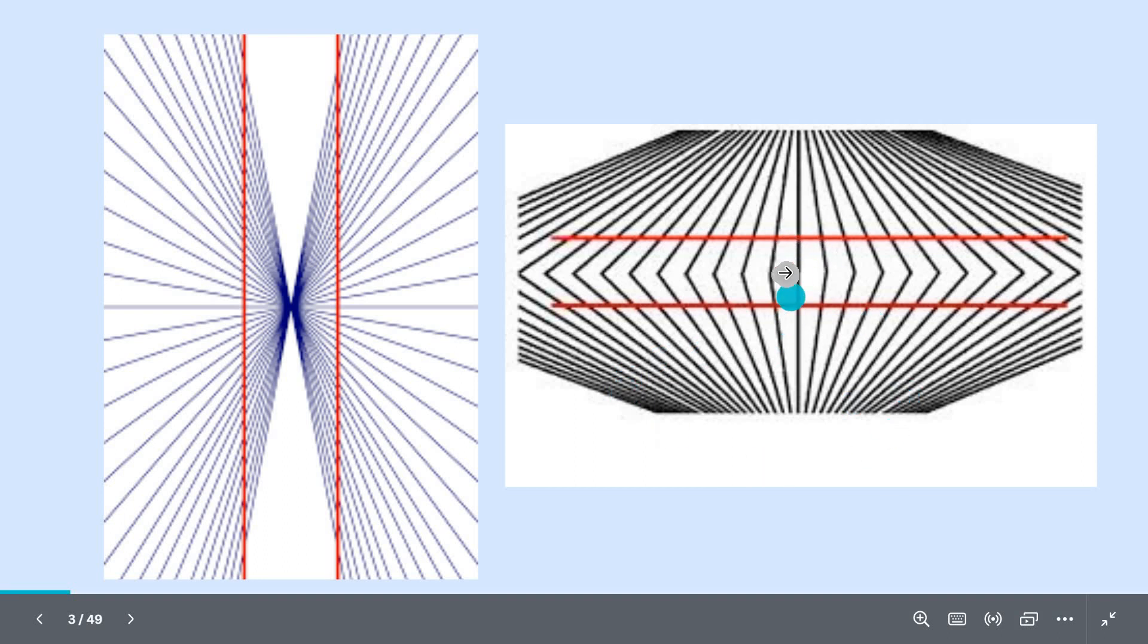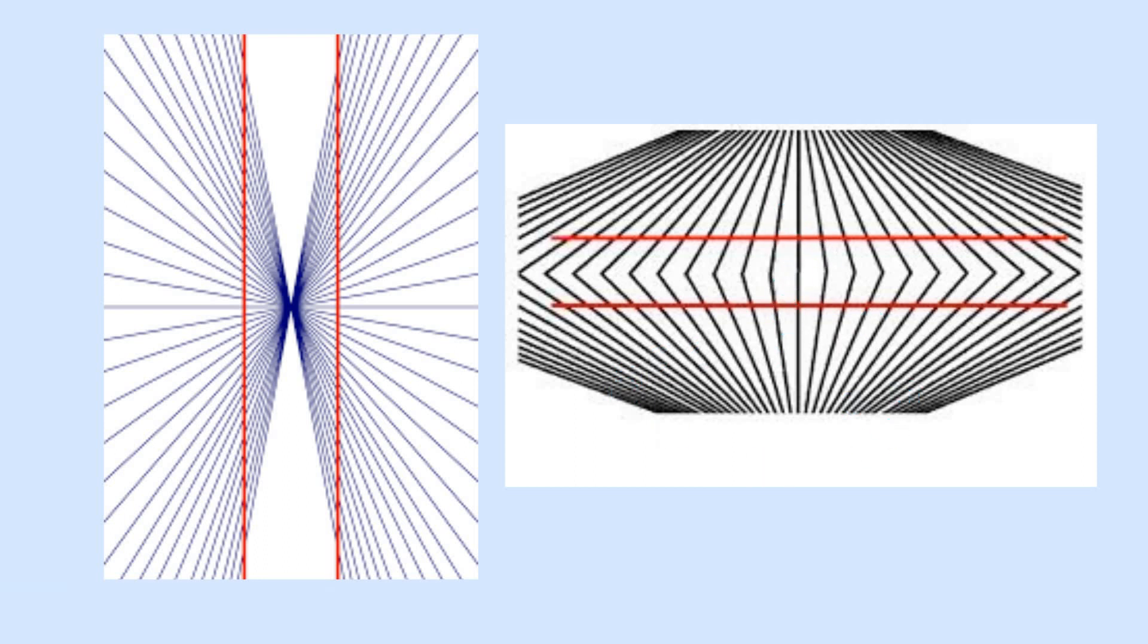Similarly, in the second picture, these two lines are straight lines, but our brain tends to misinterpret these lines as curved because of the background picture.